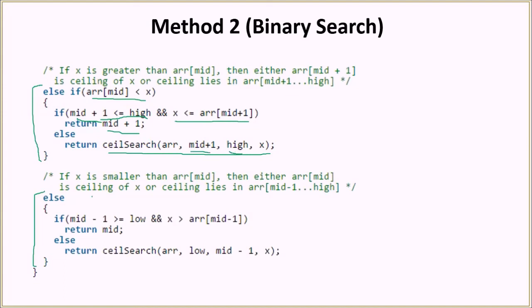Similarly, if array[mid] is greater than x, we search the first half of the array. We do a sanity check that mid-1 is greater than or equal to low, and then check if x is greater than array[mid-1]. If that is the case we return mid. Otherwise we recursively call it for the first half of the array, where the low value remains the same and the high value changes to mid-1.